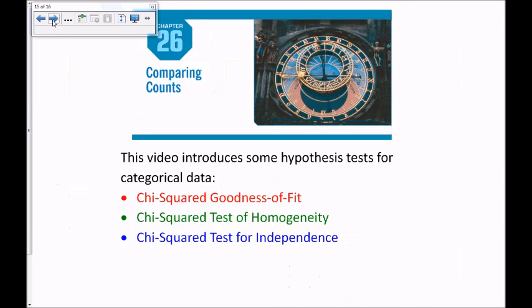This video was about three chi-squared tests: the chi-squared goodness-of-fit test, the chi-squared test for homogeneity, and the chi-squared test for independence. Thank you for watching.